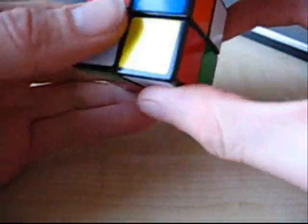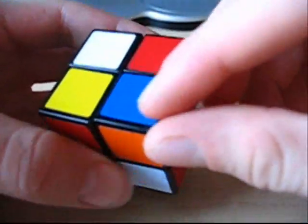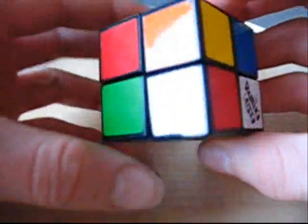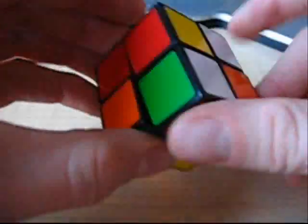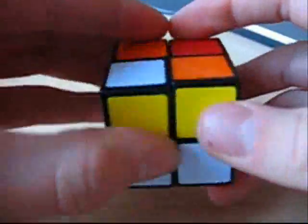Okay, so unlike the 3x3, there's only corner pieces. So there's 1, 2, 3, 4, 5, 6, 7, 8 pieces on this. No matter where you put them, they're always going to be in the corners. They can't go, there's no middle pieces.